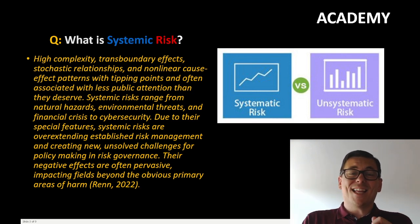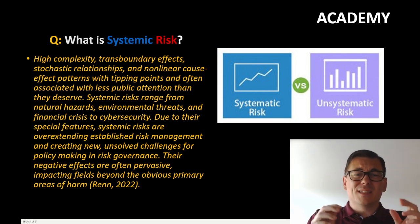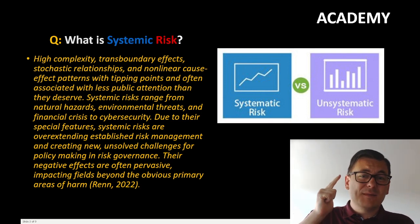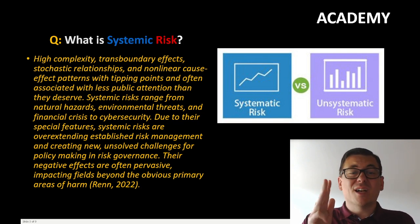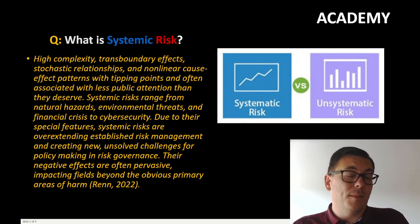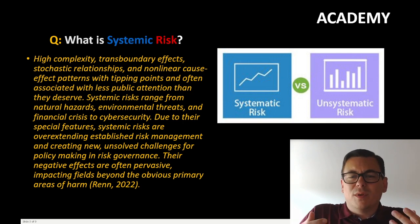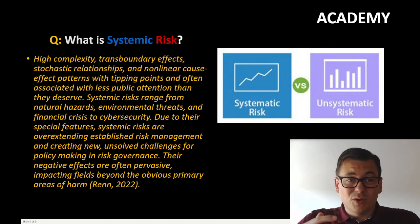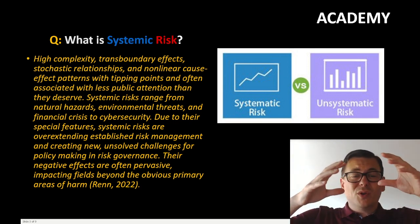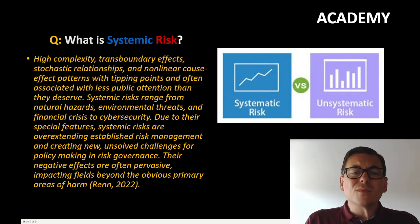He states that systemic risk is defined and characterized with having high complexity, transboundary effects, stochastic relationships, and non-linear cause-effect patterns with tipping points, and often associated with less public attention than they actually deserve. So systemic risks range from natural hazards, environmental threats, financial crisis, cyber risk—I may add money laundering—and other global issues.